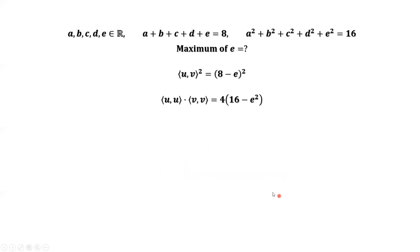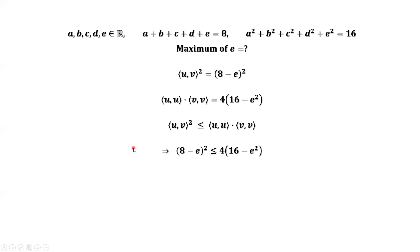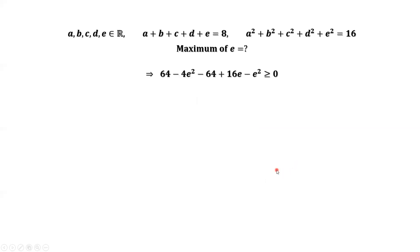We have two results. Based on the Cauchy-Schwarz inequality, we replace both sides with these two results. We have 8 minus E squared less than or equal to 4 times 16 minus E squared. This implies 4 times 16 minus E squared minus 8 minus E squared is bigger than or equal to zero. Continuing to simplify the left-hand side of this inequality, we have negative 5E squared plus 16E is bigger than or equal to zero.